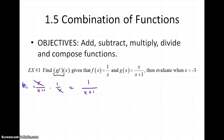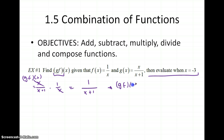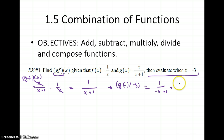It says evaluate when x equals negative 3. So if we want to find g times f of negative 3, I'm going to plug in negative 3 for x. So it's 1 over negative 3 plus 1, which is 1 over negative 2.